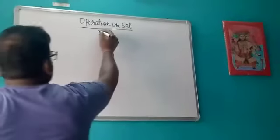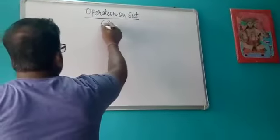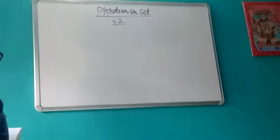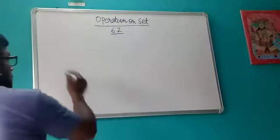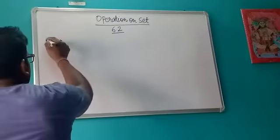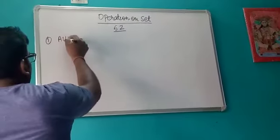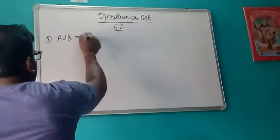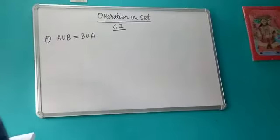Now let's discuss Exercise 6.2. Remember this important property: A union B is always equal to B union A. This will always hold regardless of what elements are in the sets.